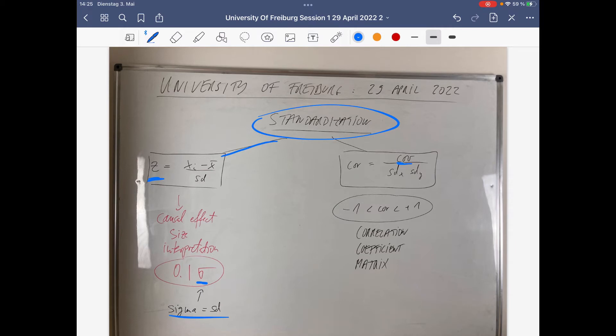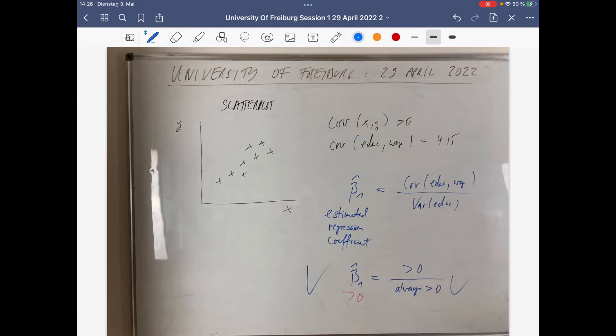So the covariance depends on metrics. If you want to get rid of the metrics, then you have to standardize the covariance by standard deviation x times standard deviation y. That yields then the correlation coefficient, which can be expressed in a correlation coefficient matrix.